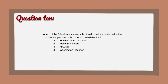Question 10: Which of the following is an example of an immediate controlled active mobilization protocol in flexor tendon rehabilitation? A) Modified Duran-Hauser, B) Modified Kleinert, C) MAMMT, D) Washington regimen.